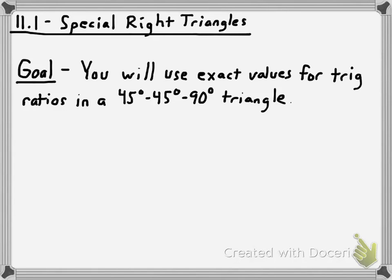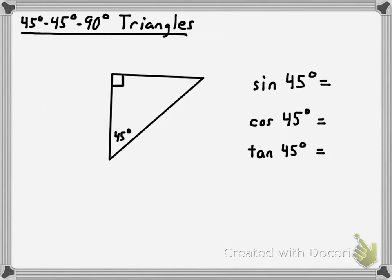When I say you're going to use exact values for trig ratios in a 45-45-90 triangle, what that means is I'm going to expect you to know what the sine of 45 degrees is, what the cosine of 45 degrees is, and what the tangent of 45 degrees is — the exact values of those — rather than being required to use your calculator anytime you need those measurements.